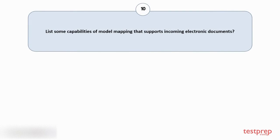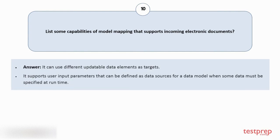Question number 10: List some capabilities of model mapping that supports incoming electronic documents? 1. It can use different updatable data elements as targets. 2. It supports user input parameters that can be defined as data sources for a data model when some data must be specified at runtime.